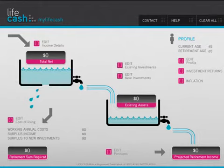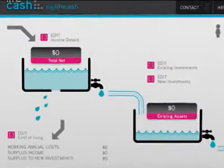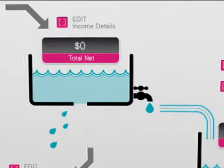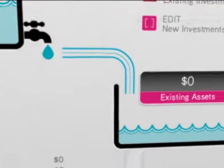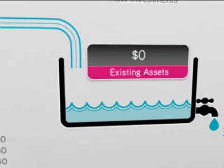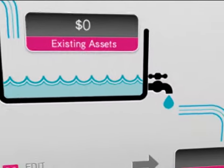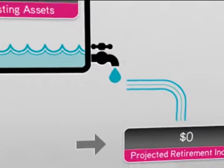When you open the app, the main screen shows a series of tanks and taps which contain water. Water flow is used to simulate cash flow. The tank in the top left-hand corner is the income tank, which feeds the asset tank. Out of the asset tank, the retirement income is produced.